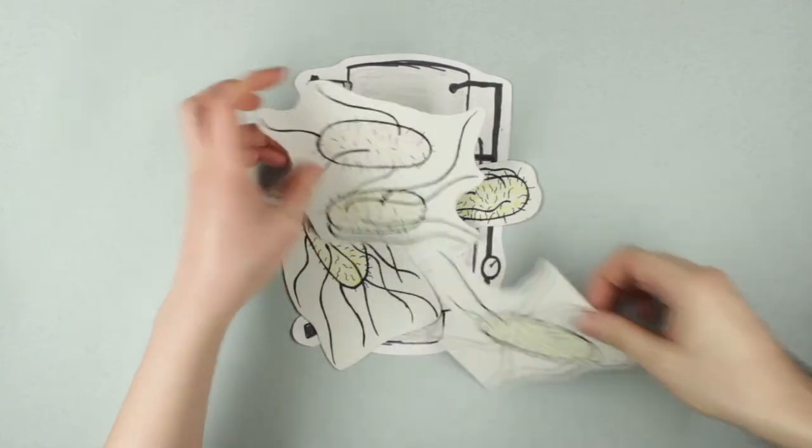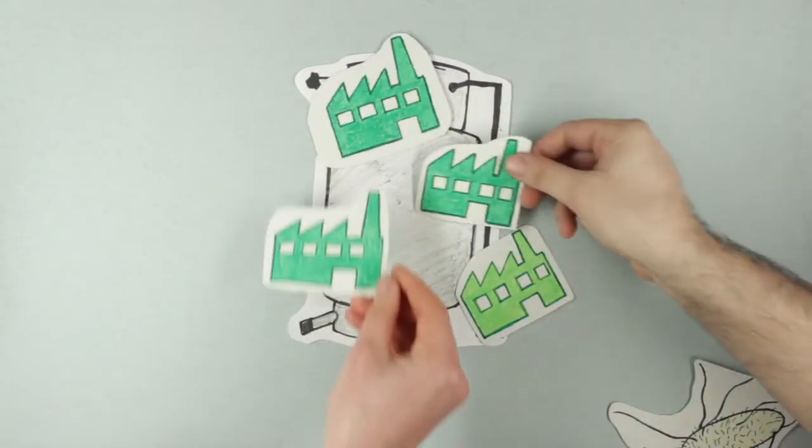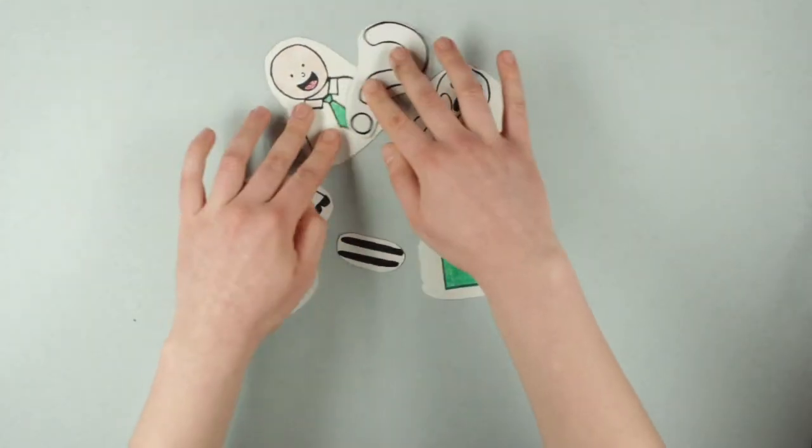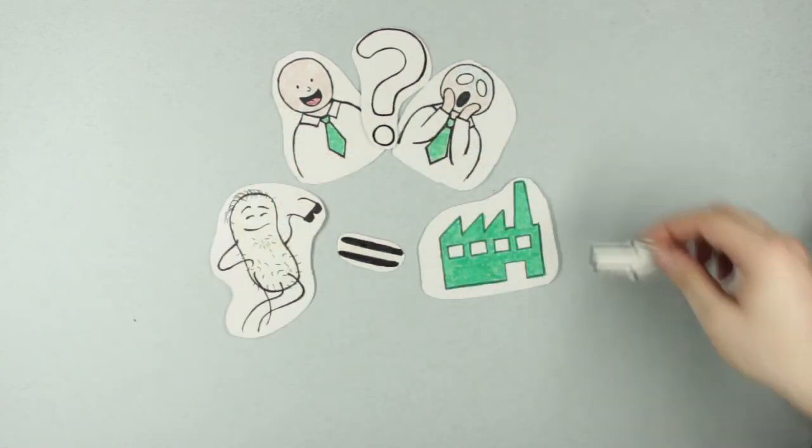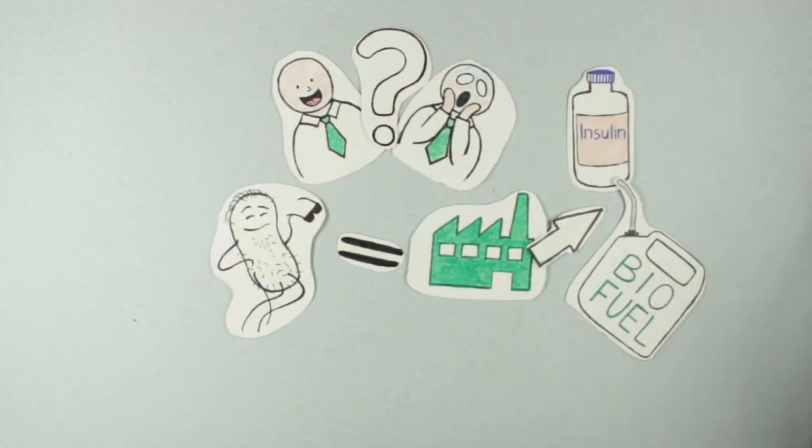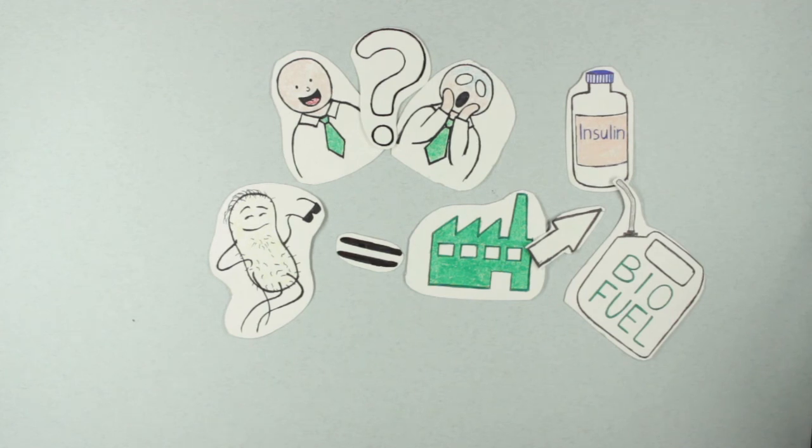Since the goal of biotechnology is to engineer bacteria to produce useful chemicals instead of growing, we need to understand how the manager, PPGPP, controls the factory. Then we can trick him into producing things for us, like biofuels for your car, or drugs that make you better.